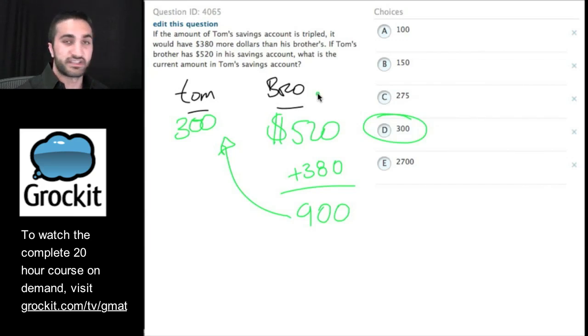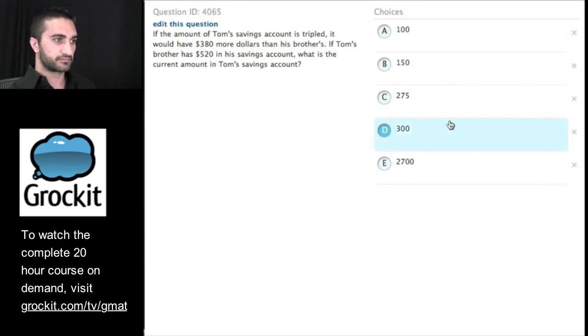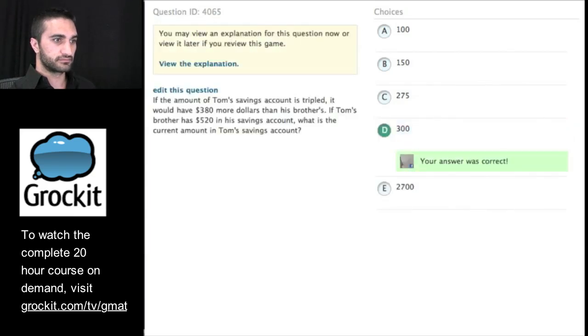This was just - didn't set up an algebraic equation, just took the information and boiled it down to some basic arithmetic and information management. So Tom and his brother, his brother has $520. They tell me that if his brother had $380 more, Tom's would be a third of that total. And we figured out what Tom has.